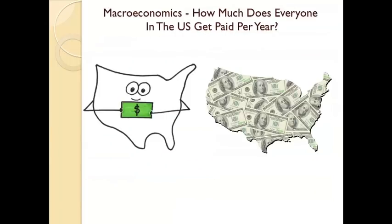But let's translate this to a macro question. Let's say we wanted to know how much the United States gets paid in a year. When we look at the total gross domestic product in the United States, it's around $15.68 trillion. In other words, this is how much the whole United States paycheck is, or was in 2012. So if we wanted to know what kind of lifestyle people in the United States had, we may look to this number. You'll find out later that there's an even more important number known as per capita GDP, but let's just start off looking at total GDP.